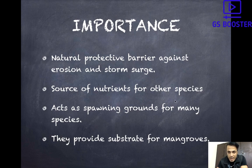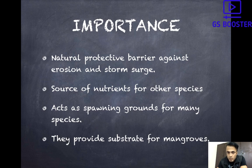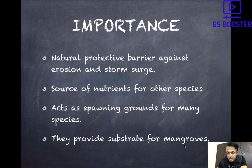Coral reefs are also a source of nutrients for other species. The algae, which produces food through photosynthesis, doesn't only provide nutrients to the coral but also to various other marine organisms and different species. Coral reefs also act as spawning grounds — that is, breeding grounds — for many species, which come to areas where coral reefs are found and breed there. They also provide substrate for mangroves. Mangroves can grow only in saline environments and need salts and nutrients, which coral reefs provide.